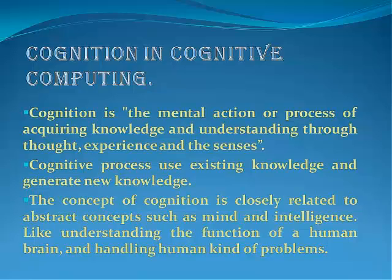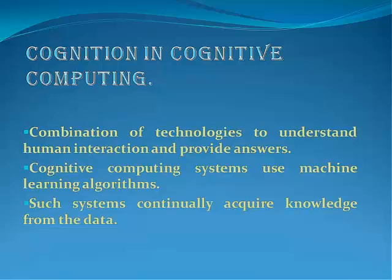The concept of cognition is closely related to abstract concepts such as mind and intelligence, like understanding the function of a human brain and handling human kind of problems. It involves a combination of technologies to understand human interaction and provide answers. Cognitive computing systems use machine learning algorithms.